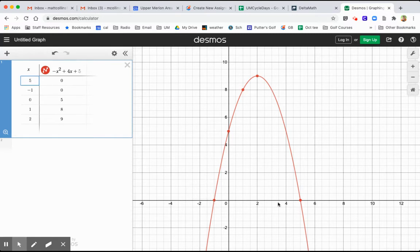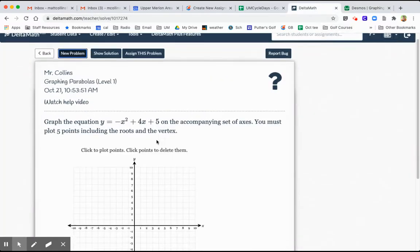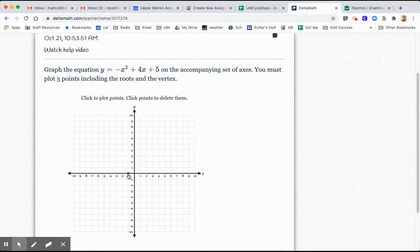Of course, going back and forth to the screens is not easy. But let's plot these. I got negative 1, 0 and 5, 0. So if I go to DeltaMath, I click here, negative 1, 0 and 5, 0. Of course, as you click those buttons, a little green dot appears for both.